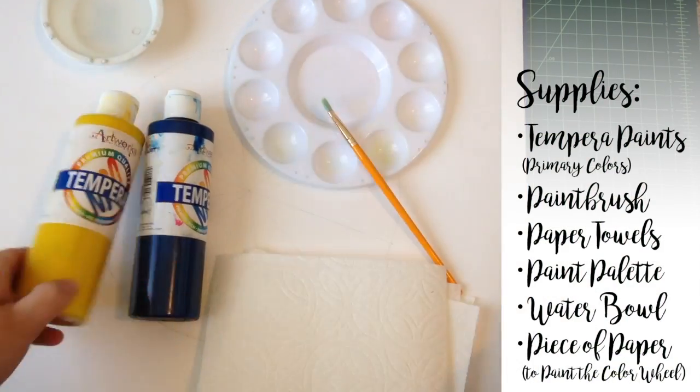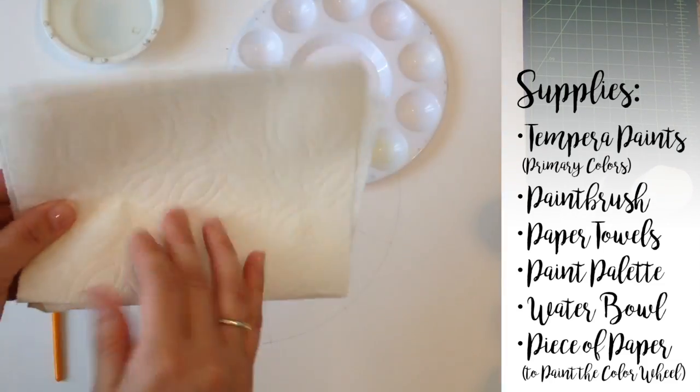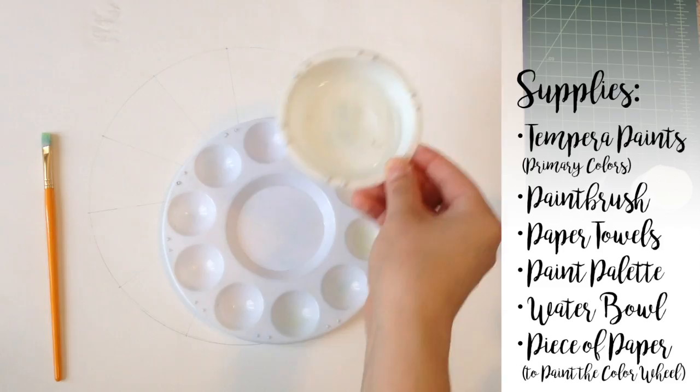You'll need three tempera paints, the primary colors red, yellow, and blue, a paintbrush, a paper towel, a paint palette, and a water bowl.